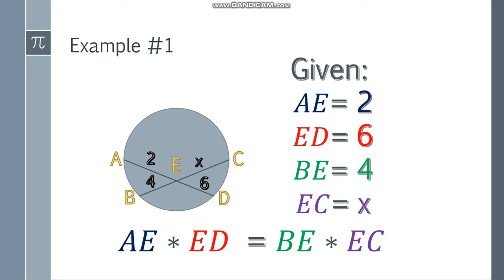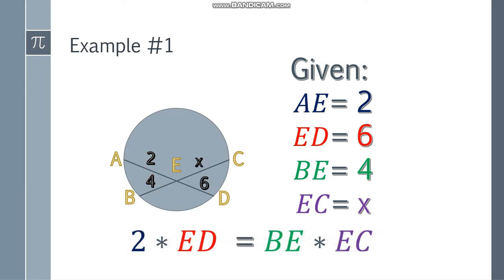So AE times ED is equal to the product of these two. Substitute it. So we have 2 here, ED is 6, BE is 4, and EC we don't know, that's X. So simplify it. 2 times 6, that will be 12, and 4 times EC. To get the value of EC, just divide both sides by 4, and the value of EC is 3. It's easier, right?